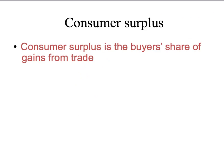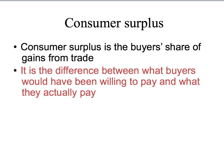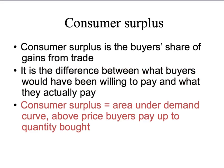Let's summarise our results so far. Consumer surplus is the buyer's share of gains from trade — simply the difference between what buyers would have been willing to pay at most and what they actually have to pay. And because the marginal value curve is the demand curve, a person's consumer surplus is simply the area under the demand curve, above the price that the consumer pays, up to the quantity of the product that the consumer purchases.